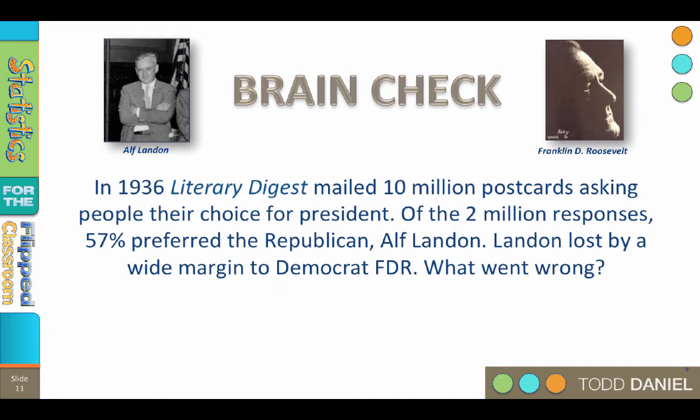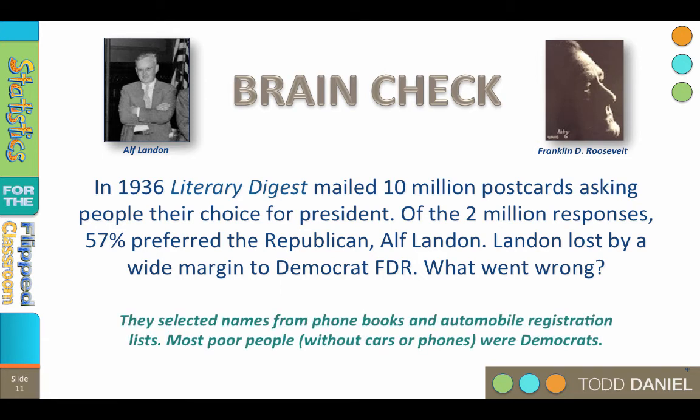The answer is sampling error by asking too many of the same people. The magazine selected names and addresses from phone books and automobile registration lists. But this was 1936 — the Great Depression. Who could afford cars and personal telephones? People with money or jobs. Literary Digest was asking too many of the same people. Most poor and formerly middle-class people — those without cars or phones — voted for the Democratic Party and FDR.